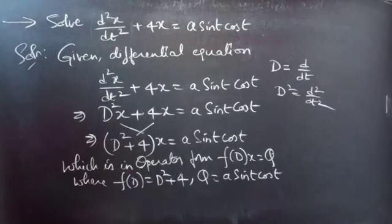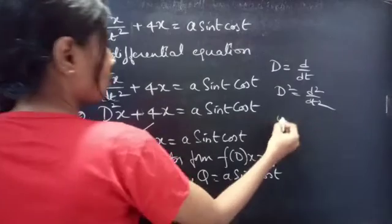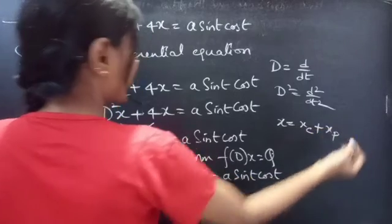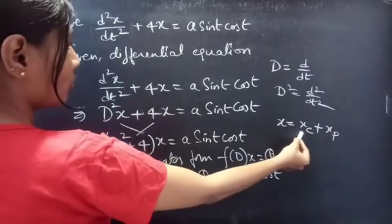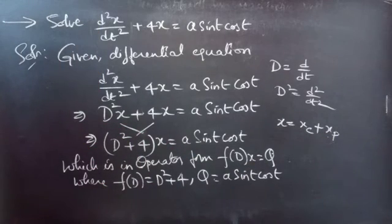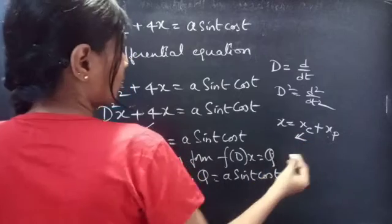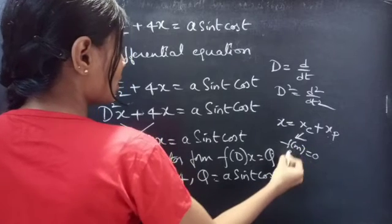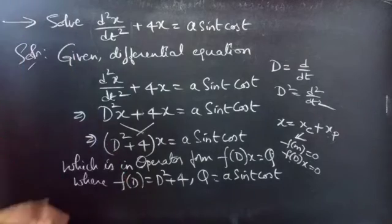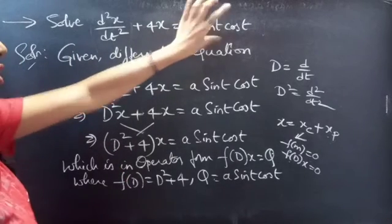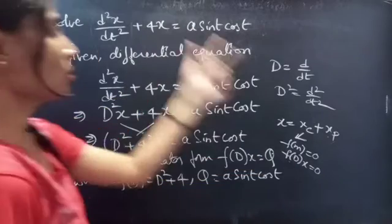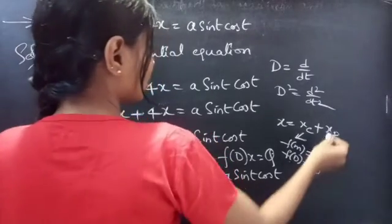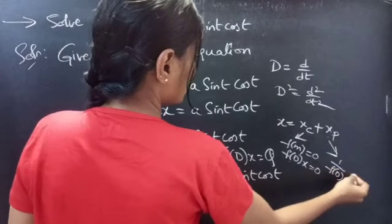We need to find the general solution using x = xc + xp, where xc is the complementary function and xp is the particular integral. We find xc using roots of the auxiliary equation of the given non-homogeneous equation by taking the RHS to 0, obtaining the corresponding homogeneous equation. We find xp using 1/f(D) · Q.